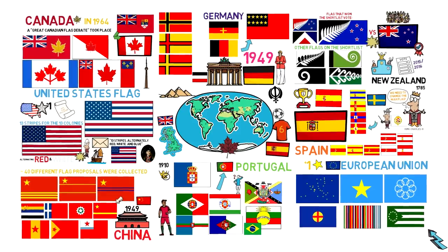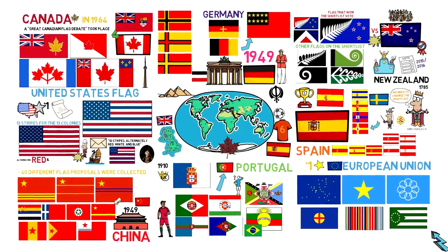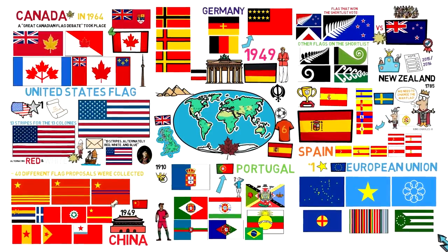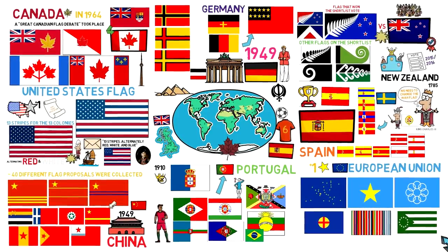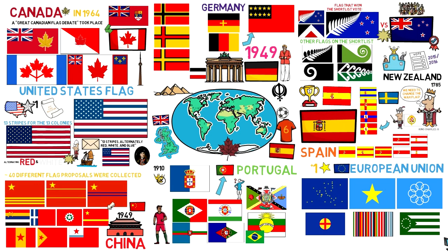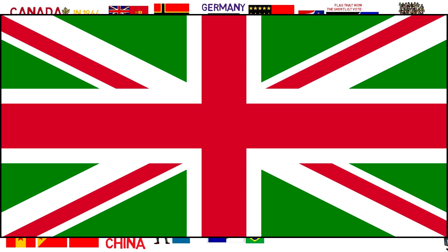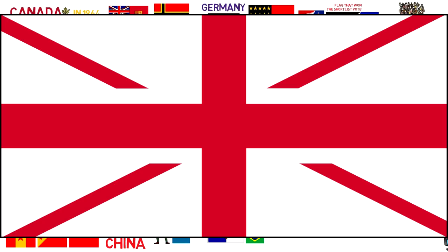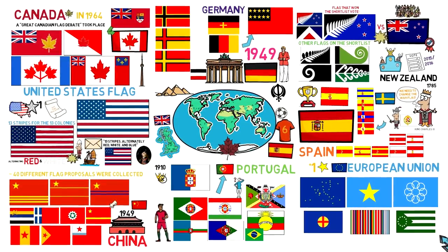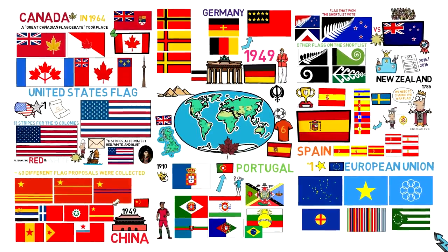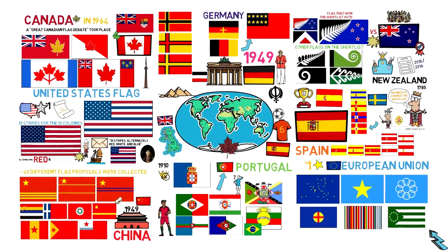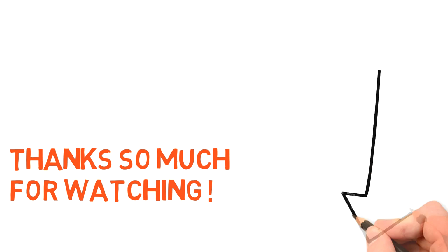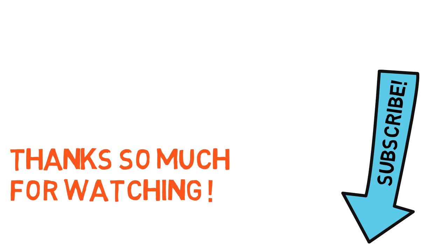So those are a few of the proposed flags that countries chose not to use. If you liked this video, I could maybe do one speculating about possible flag changes in the future — like the UK, where in 2013 they collected a few proposals for an eventual flag change should Scotland leave the UK, with some switching the blue with green, others adding the Welsh dragon, or switching to a white background. There's also been a lot of talk regarding a flag change in Australia. Let me know in the comments if you would like to see that. Either way, thanks so much for watching, remember to subscribe if you want to catch future videos, and I will see you next time for more general knowledge.